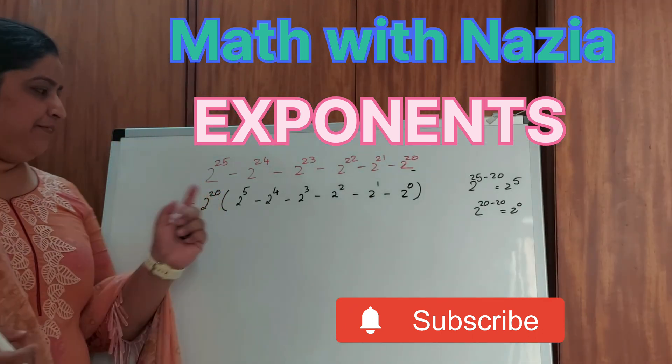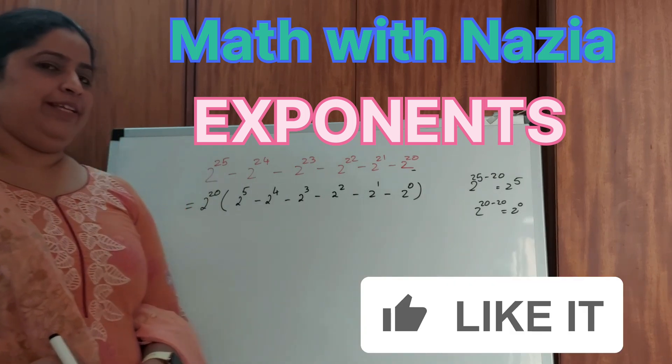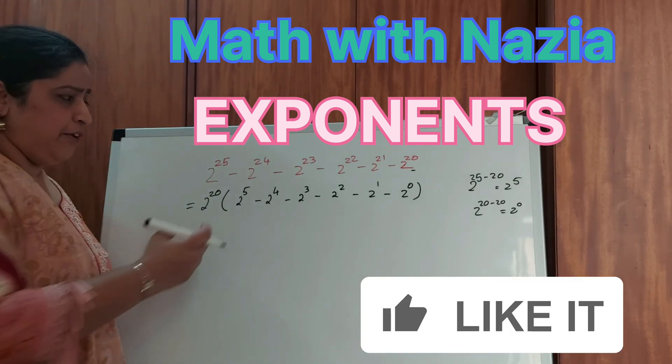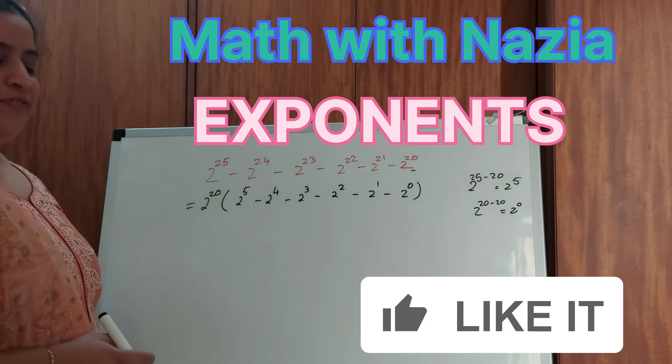Now I think after the first step this question looks pretty easy for you, right? Because we have 2 to the power of 5 till 2 to the power of 0, which is pretty easy to find out.